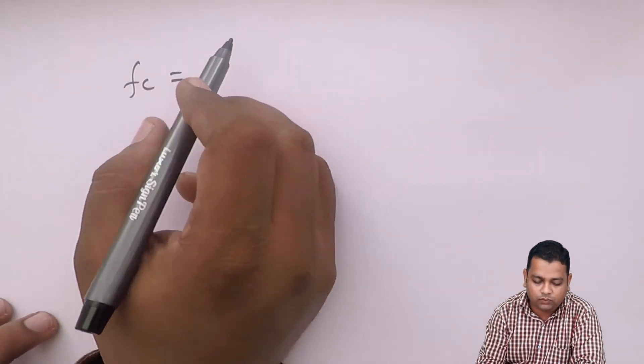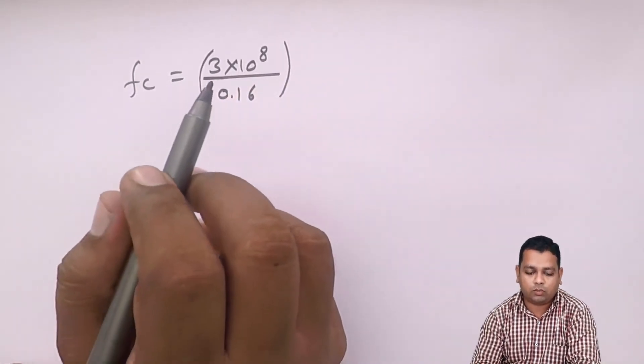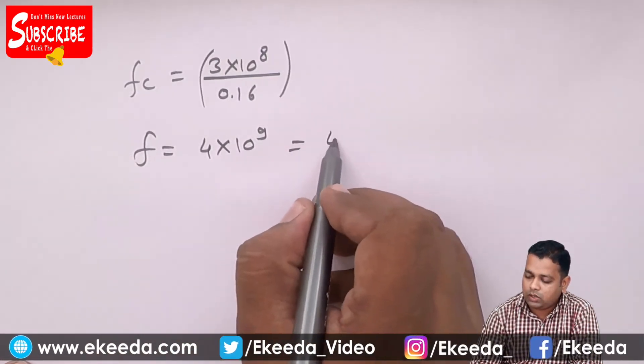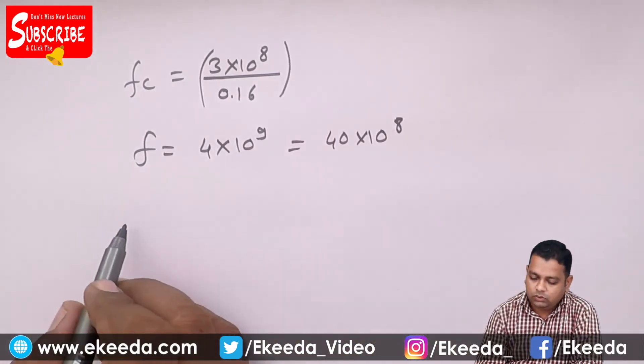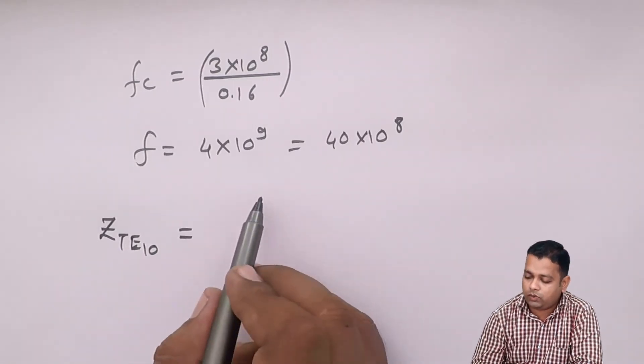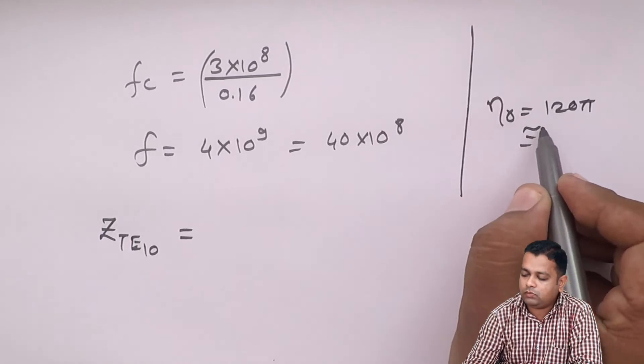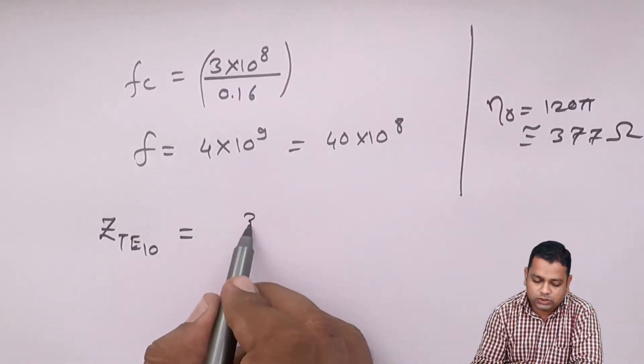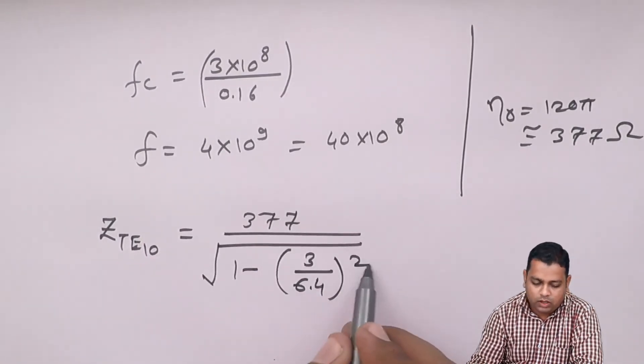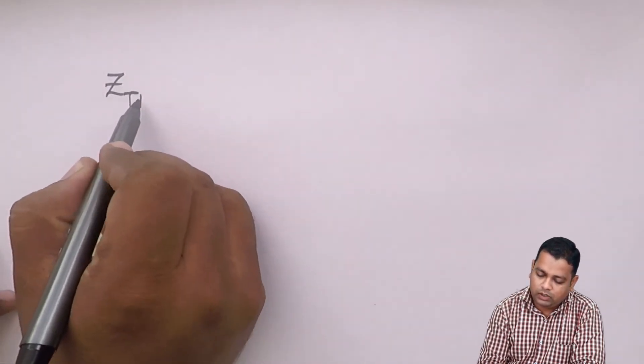The cutoff frequency can be substituted into the above formula. F is already with us, that is 4 into 10 to power 9. The formula to obtain the wave impedance ZTE10 can be given as the intrinsic impedance for the air-filled rectangular waveguide, eta equals 120 pi, that is 377 ohms, divided by square root of 1 minus the ratio. This is 377 divided by square root of 1 minus 3 divided by 6.4 squared.